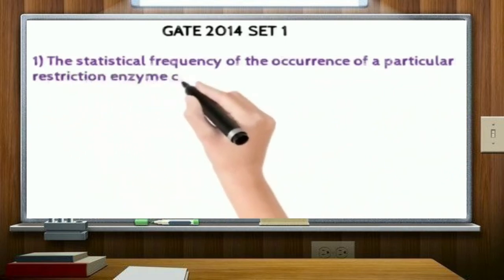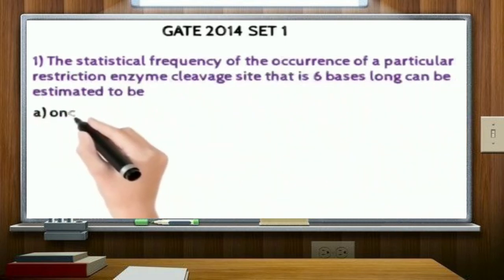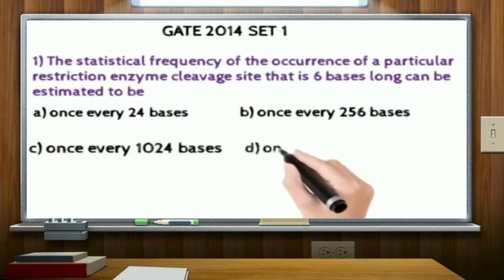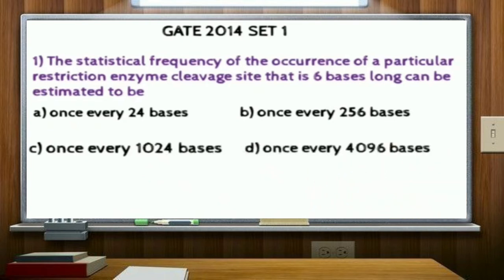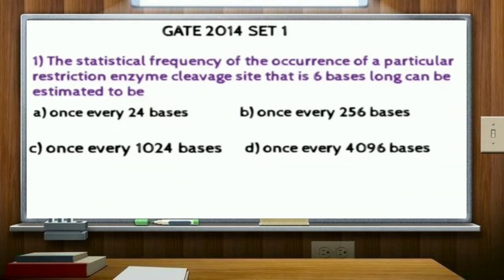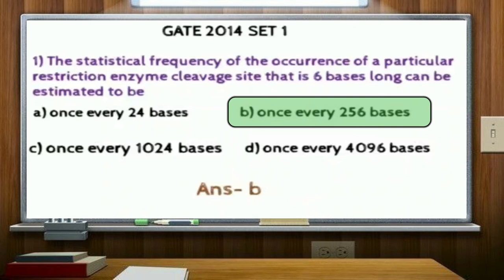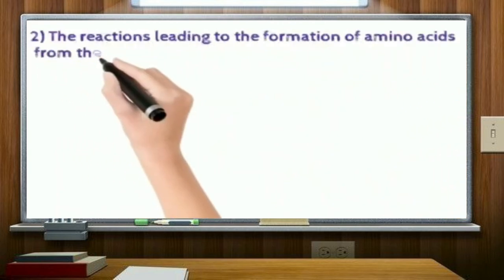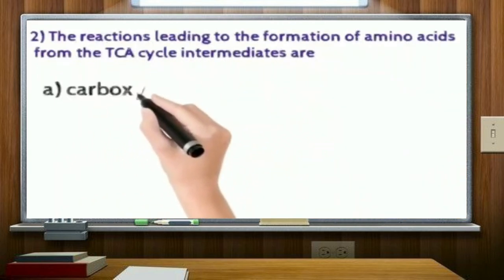The statistical frequency of the occurrence of a particular restriction enzyme cleavage site that is six bases long can be estimated to: option A, once every 24 bases; option B, once every 256 bases; option C, once every 1024 bases; and option D, every 4096 bases. Correct answer: option B.